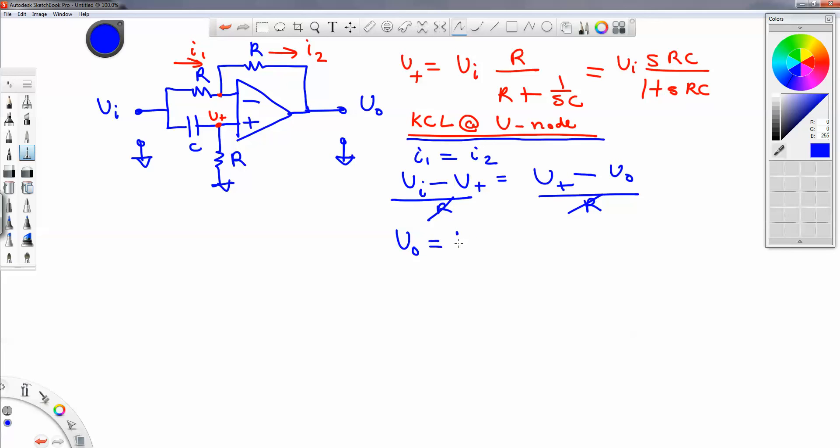So in terms of Vout and Vin, Vout is equal to Vin 2V+ minus Vin. That is Vout is equal to Vin 2SRC. Now I'm just substituting for V+, 1 plus SRC minus 1.